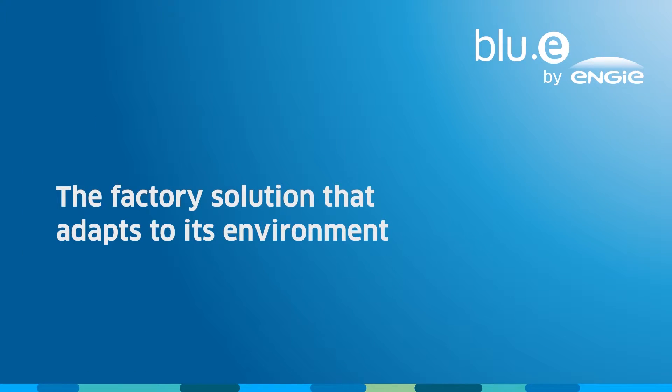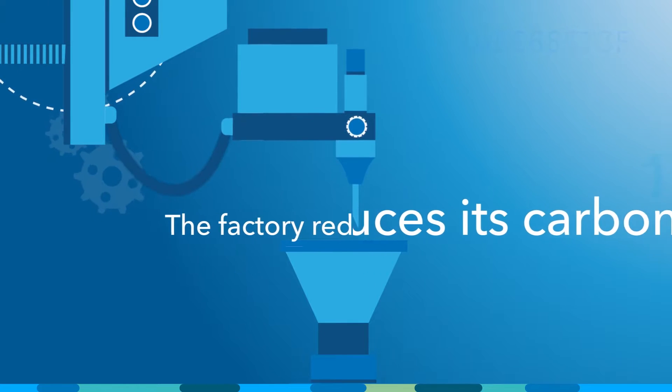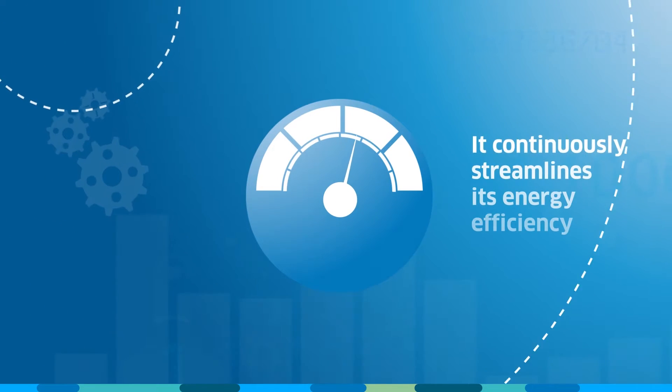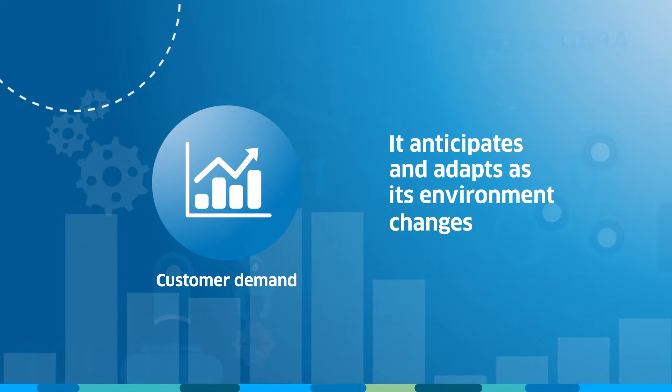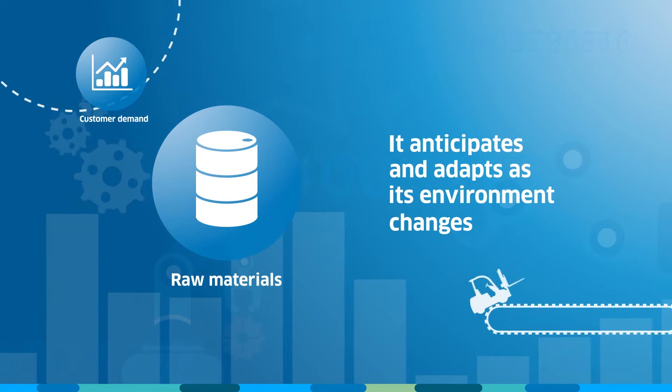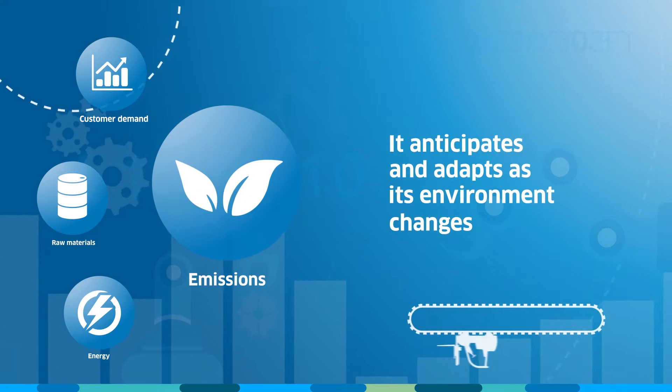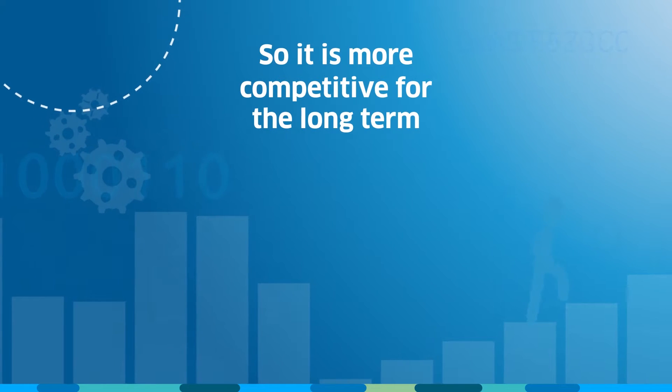BlueE by Engie, the factory solution that adapts to its environment. The factory reduces its carbon footprint. It continuously streamlines its energy efficiency. It anticipates and adapts as its environment changes, customer demand, raw materials, energy, emissions. So it is more competitive for the long term.